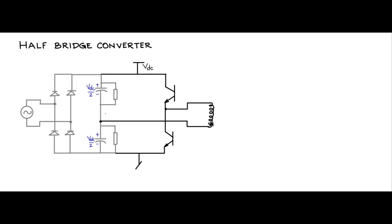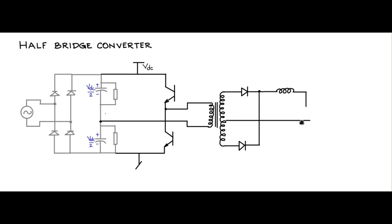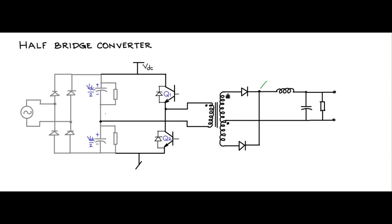This winding is of course the primary of the transformer. The secondary of the transformer is center-tapped, and you have two diodes in this fashion just like in the case of the push-pull, and with respect to the center tap you have an inductor, a capacitor, and the output load. So the behavior of the secondary side of the circuit is exactly the same as the push-pull. I am also putting in freewheeling diodes — body diodes across the switches for completeness. You have the dot polarities in this fashion, and this is the pole voltage V_P.